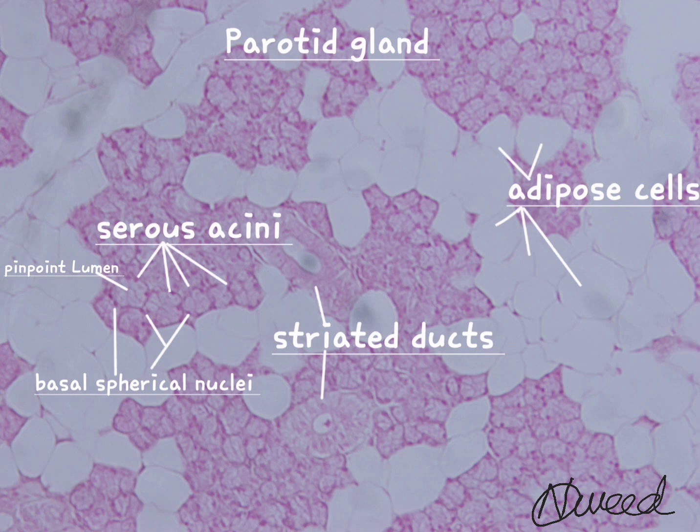The septa carries ducts, nerves, blood vessels, and lymph vessels. This is a slide of the parotid gland. The parenchyma of the parotid gland consists of only serous acini. The serous acini are spherical structures, each consisting of secretory epithelial cells arranged around a central cavity.